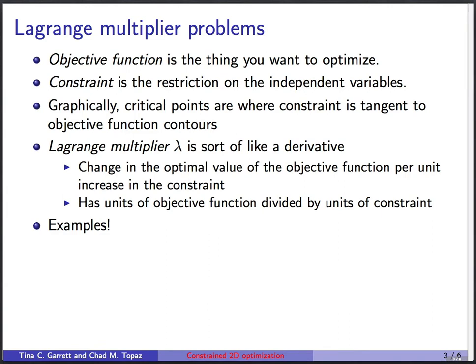So a little bit of important terminology here. The objective function in a Lagrange multiplier problem is the thing that you would like to optimize, the thing you want to find the maximum or minimum of. So I want to make sure you know this term because we'll use it. And the constraint is the restriction that's placed on the independent variables. It's the thing that tells you you're only allowed to look at certain values of x and y.